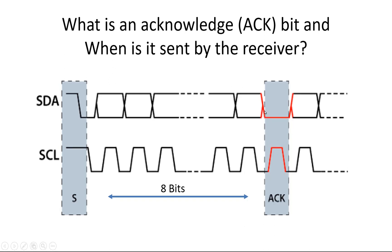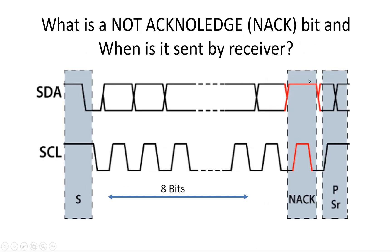If the SDA line remains high, that bit is called the not-acknowledge bit. As you can see in the figure, this is in fact the absence of the ACK bit. The SDA line remains high because the transmitter has released control of the bus and the receiver is not applying a zero on the ninth clock cycle — so SDA remains high because of the pull-up resistors.